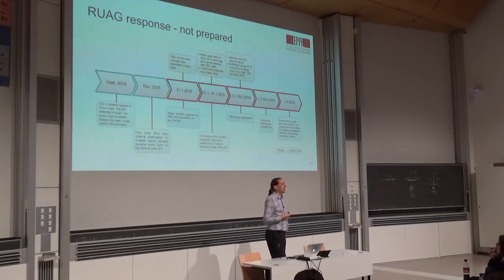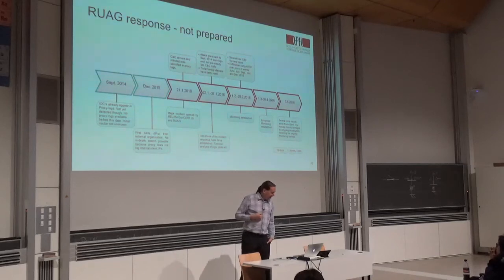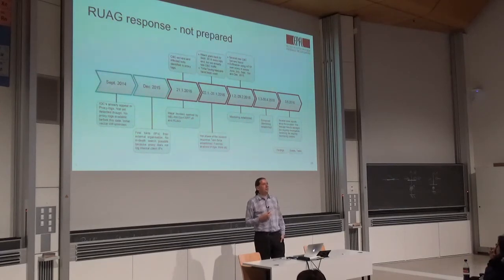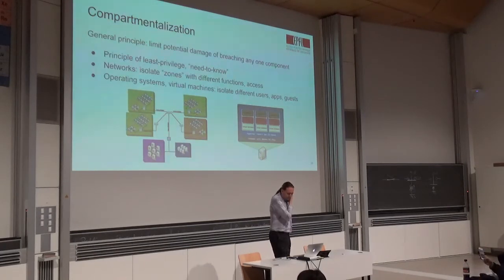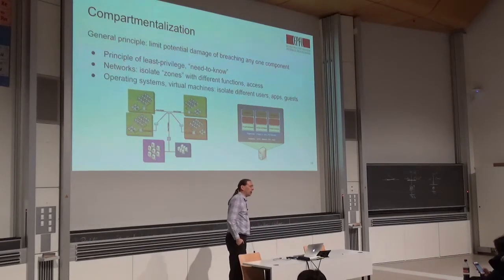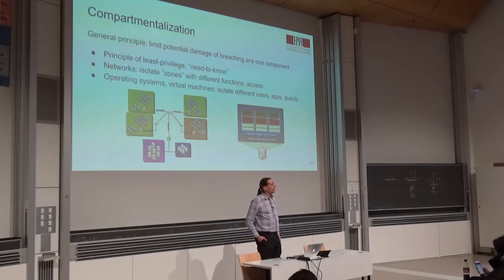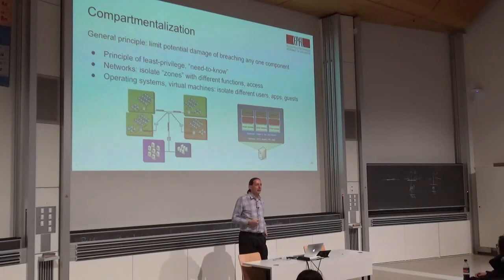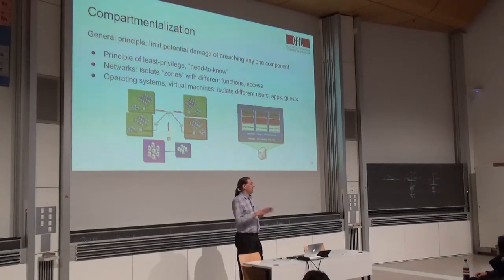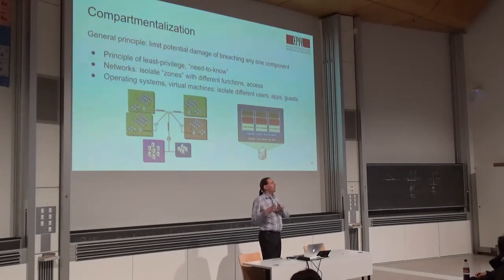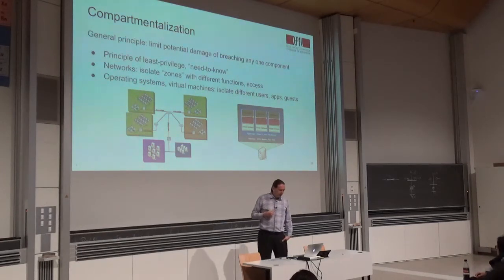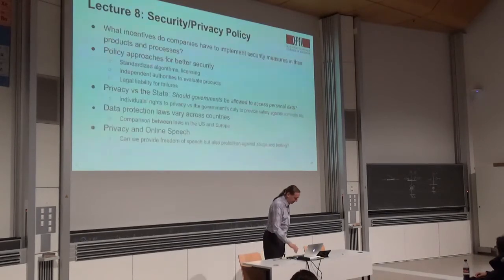This would be the case for the Swiss Ruag attacker — the attacker who got access to this Swiss defense contractor for a number of months in 2016 before finally being detected. Because of these severe problems with operational security and network security, it's becoming more and more important to use techniques like compartmentalization — dividing networks, secrets, and data into different zones, and ensuring that each zone has the fewest users and other systems with access, minimizing the damage if any one zone gets compromised.